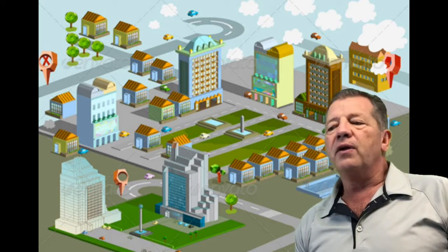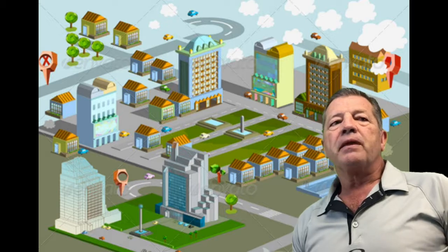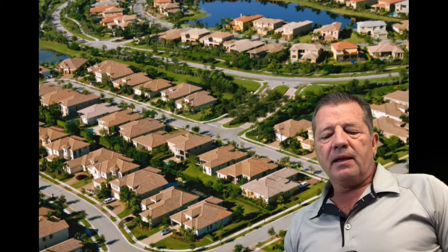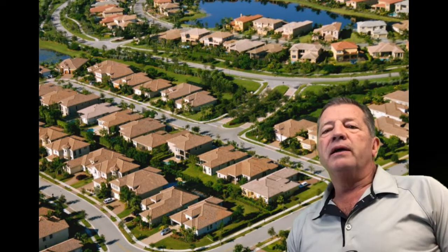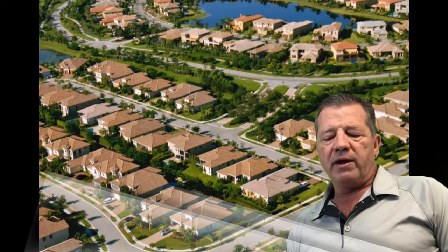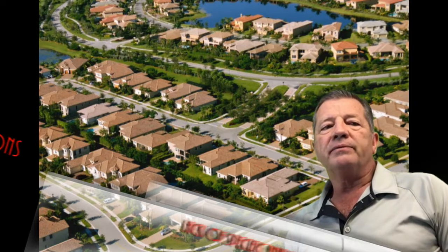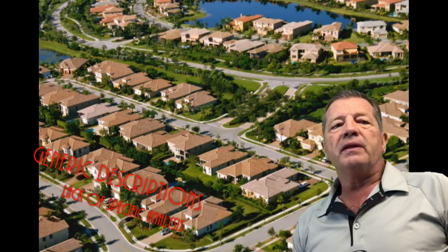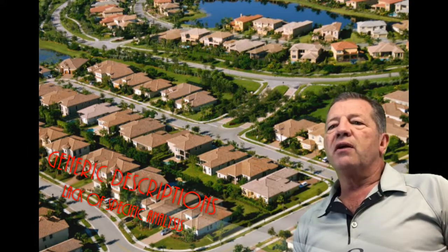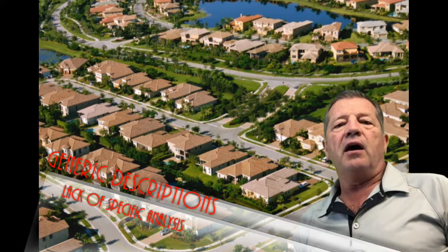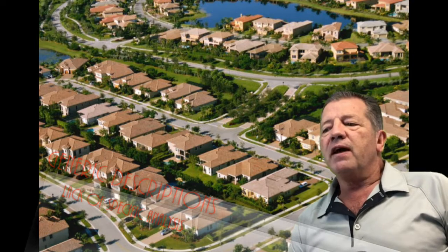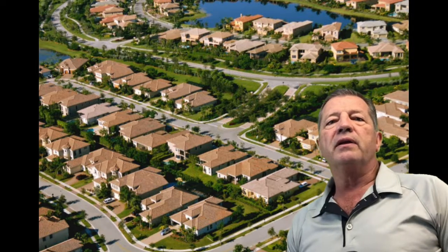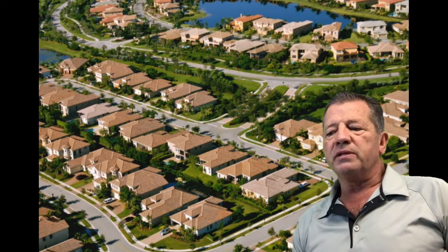This can also extend into other areas of the report where conflicting statements exist. Canned comments that don't apply to the property being appraised can be a common error or deficiency. Often times, the neighborhood descriptions are so generic based on canned comments that they don't provide the information the client needs to make an accurate determination of the neighborhood characteristics.